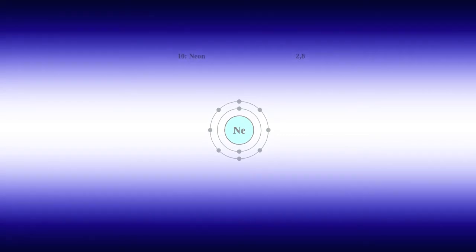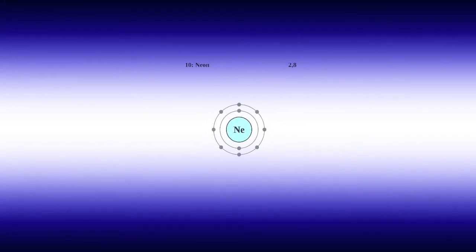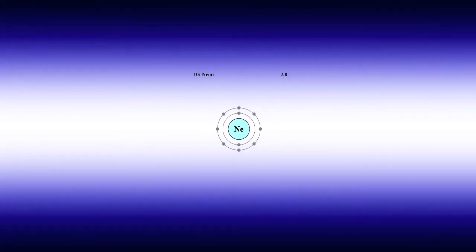When energy, in this case electricity, is applied to the neon atom, the outside electrons absorb the energy and jump up an additional energy level. After a while, these electrons fall back and release the absorbed energy in the form of photons or light.